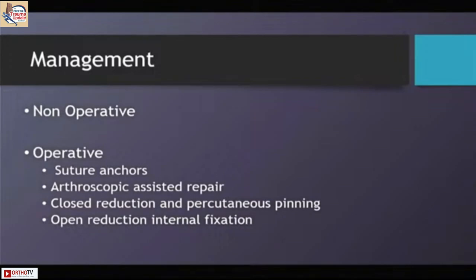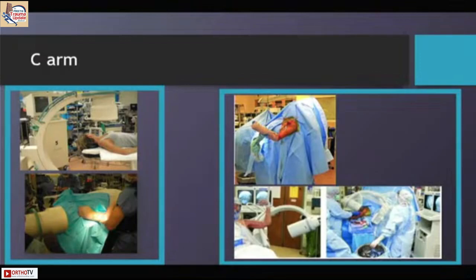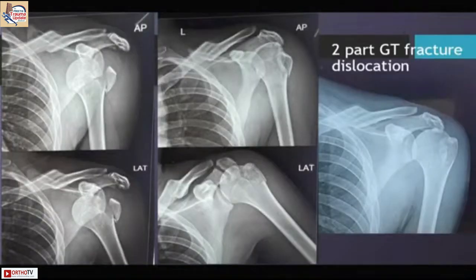I always do cases in the supine position, but the beach chair position is particularly useful in three-part and four-part fractures where you may need to convert to arthroplasty. It is very useful to understand the position of the serum preoperatively. Deltoid splitting approaches are useful for isolated greater tuberosity fixation, but you must be sure there is no surgical neck fracture, as inserting a plate then becomes difficult. Deltopectoral approaches are far more useful in three-part and four-part fracture dislocations.